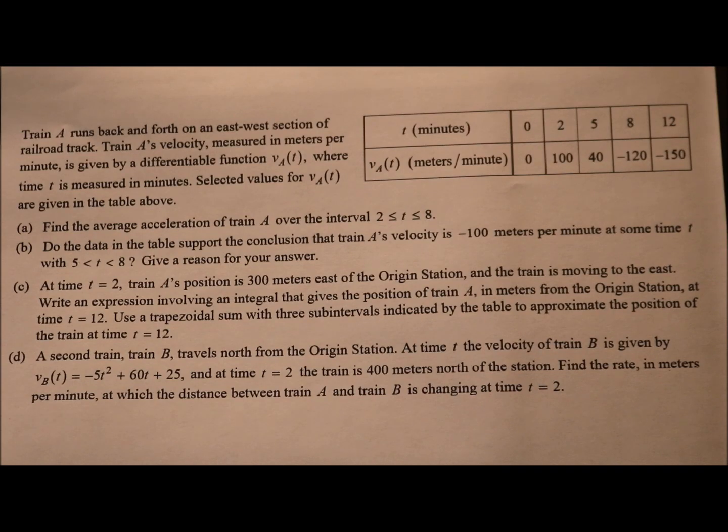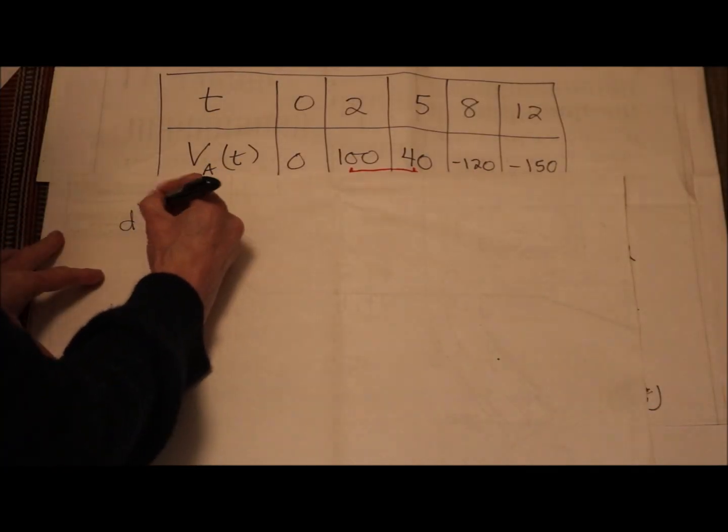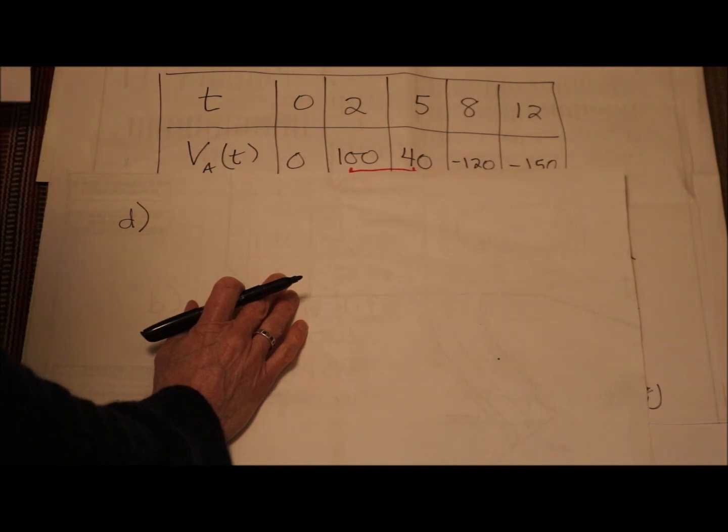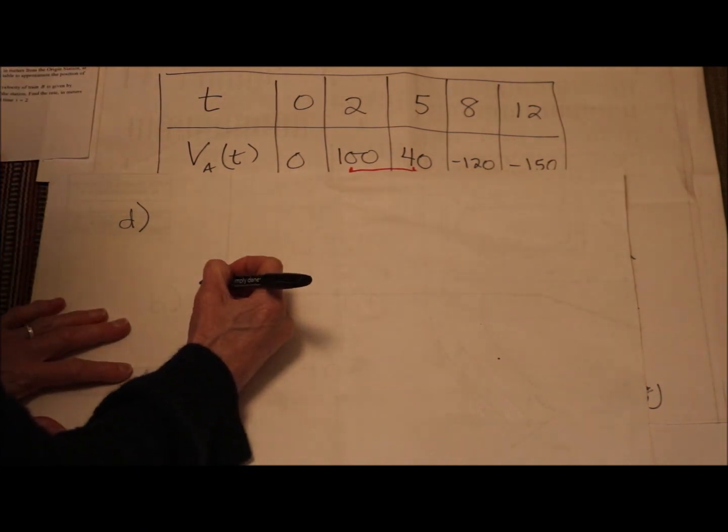Part d. A second train, train B, travels north from the origin station. At time t, the velocity of train B is given by v sub b of t equals negative 5 t squared plus 60t plus 25. And at time t equals 2, the train is 400 meters north of the station. Find the rate in meters per minute at which the distance between train A and train B is changing at time t equals 2. Hold on to your hats. D is a related rates problem. I love these.